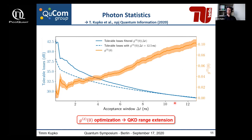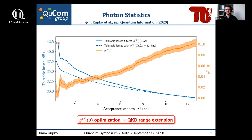If we apply not only temporal filtering for the sifted key rate and quantum bit error ratio, but also use the enhanced g²(0) value, one can see that there is an even better range extension achievable. One important caveat: if one wants to use the filtered autocorrelation function, one must also filter the photons on the sender side. Otherwise, one could overestimate the single photon purity of the source, potentially opening channels for an attack.